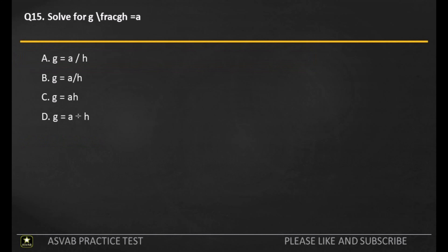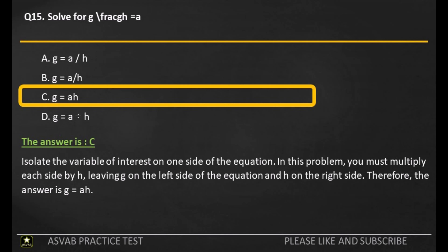Q15. Solve for the variable. A. B. C. D. The answer is C. Isolate the variable of interest on one side of the equation. In this problem, you must multiply each side by H, leaving G on the left side of the equation and H on the right side. Therefore, the answer is G equals A.